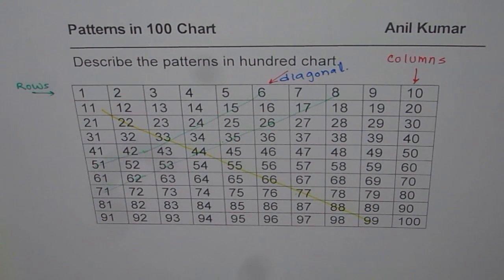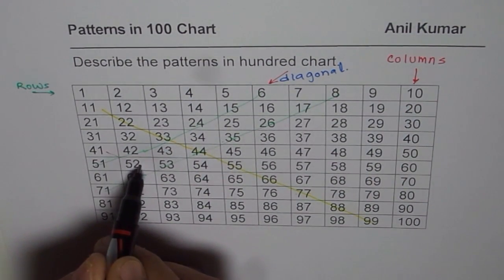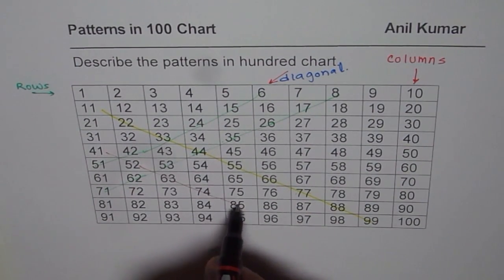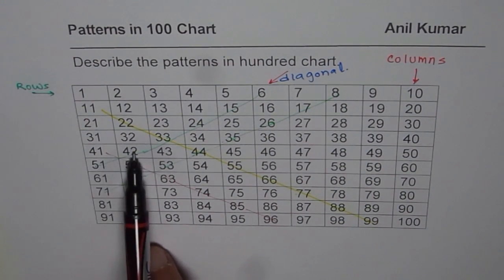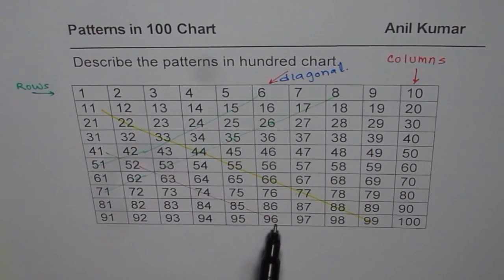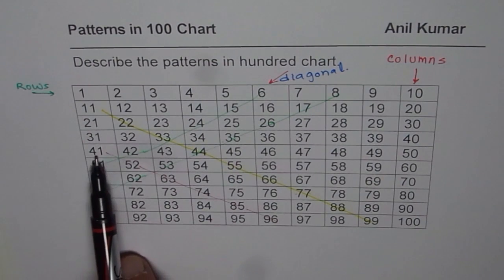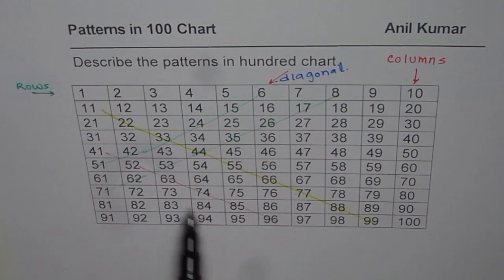Now let us see what happens when you move towards the right side. If you move right and down from 41 to 52, then 63, 74, 85, and 96 — what is happening in this diagonal? When you move right and down, you are adding 11 each time. The ones place increases and the tens place also increases by 1, so you add 11 as you move diagonally towards the right and down.